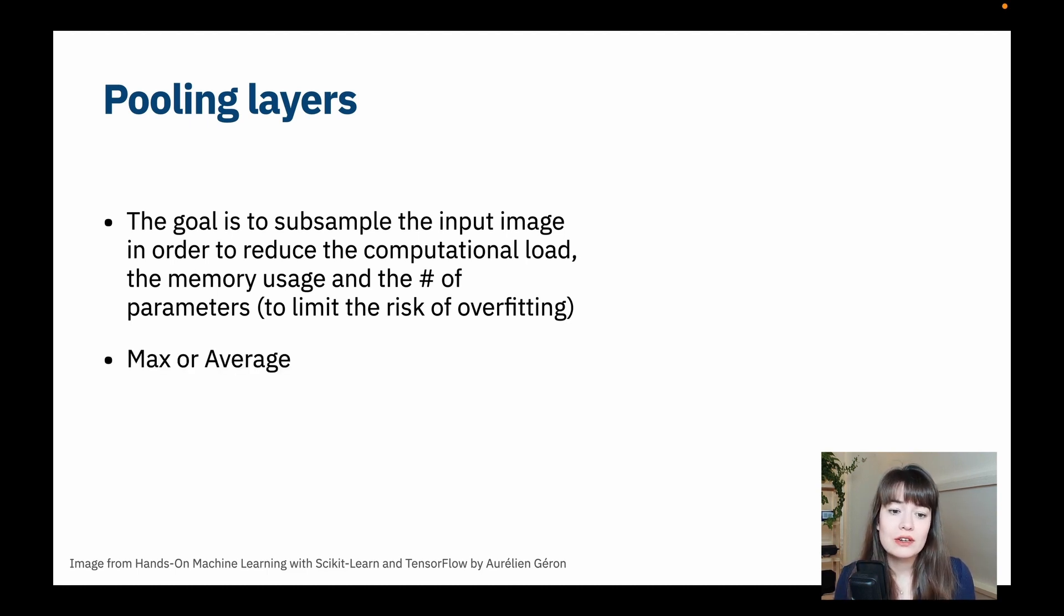There are two types of pooling layers. One of them is called max and the other one is called the average. And also one thing that is really important to note about the pooling layers is that they do not change with small translations to the image.